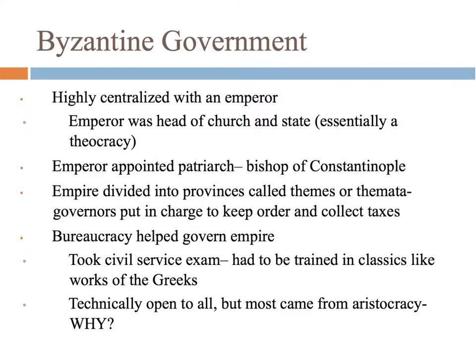Here's how the Byzantine government was set up — it was highly centralized with an emperor. They kept the whole idea of the emperor going after the Roman Empire fell. The emperor was the head of both the church and the state, so there's no division in the Byzantine Empire between religion and government. The emperor appointed the patriarch, who was the bishop of Constantinople — he's like the head of their church. The Byzantines also divided their empire into provinces called themes or themata, and governors were put in charge of each theme to keep order and collect taxes. It's easier to control if you have governors who can monitor the local area.